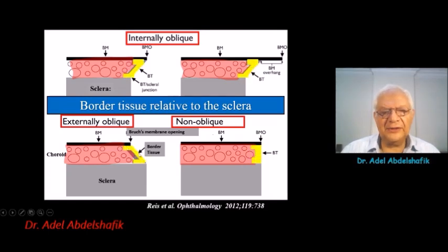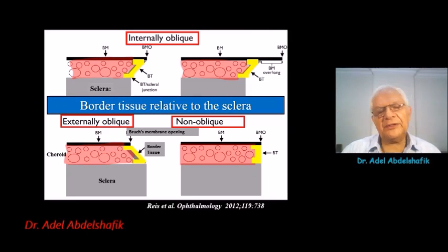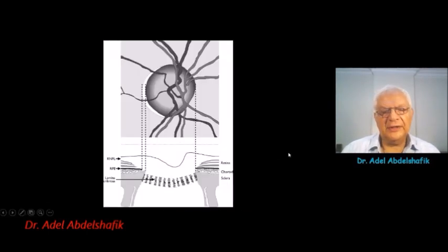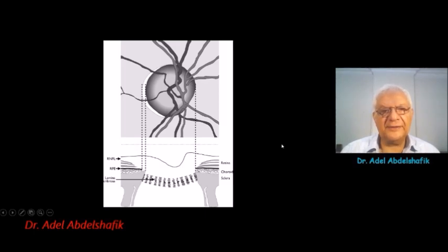When it is externally oblique, it will be visible when you perform this examination. In the other situations, we will not see it. In this example, you can see the bordered tissue of Elshning on the temporal side, but it's not visible on the nasal side.